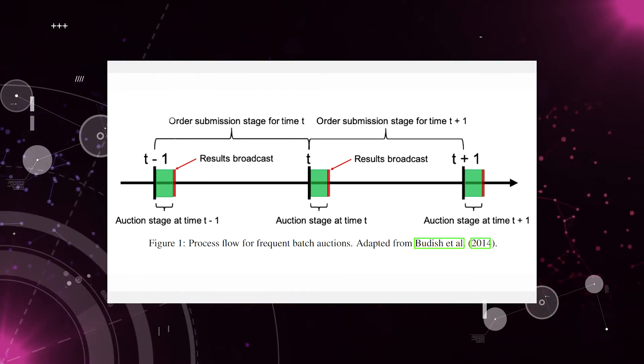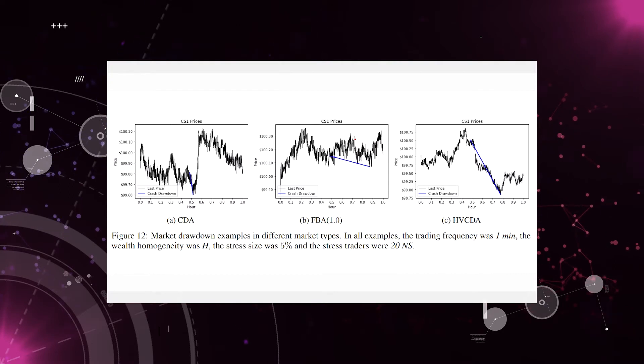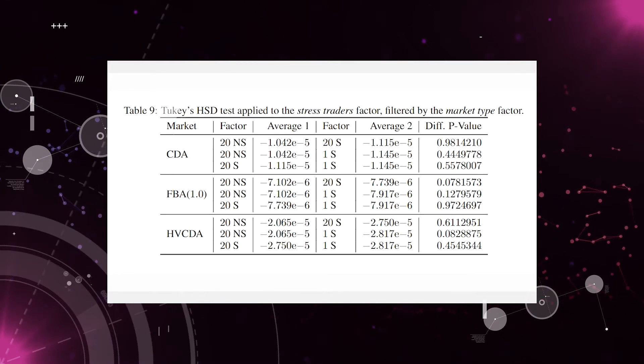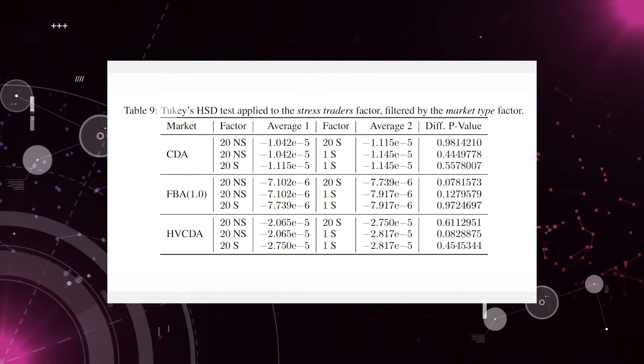As an example of using SHIFT to test financial theories, we implemented the Frequent Batch Auction system of Eric Budish, Peter Cramton, and John Shim — which I will refer to as FBA. The authors propose a fast auction system where orders are received continuously but executed in batches using an envelope-type auction which happens very frequently. To our surprise, all market quality measures improved when using FBA: less volatility, crashes happen less frequently and are less severe — essentially all measures of market wellness improved.